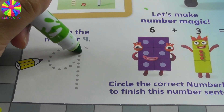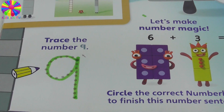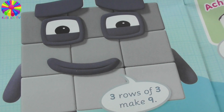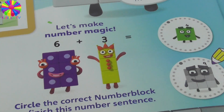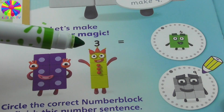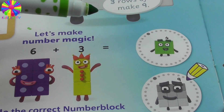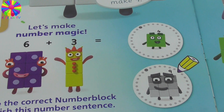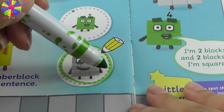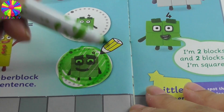Trace the number nine together. There you go! Three rows of three make nine. Let's make number magic: six number blocks plus three number blocks equals nine. Six plus three equals nine!